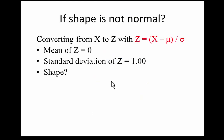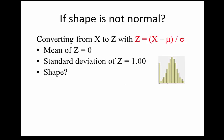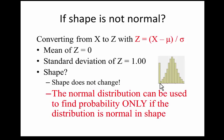What if the distribution isn't normal? Would it help to convert to a z-score? If we convert from x to z, we get a distribution with a mean of 0 and a standard deviation of 1, but the shape remains the same. If the original distribution has a bump of scores at 0, those scores will all convert to the same z-score and we'll still have that bump. Converting to z-scores does not change the shape. A critically important point: the normal distribution can be used to find probability only if the distribution is normal in shape.